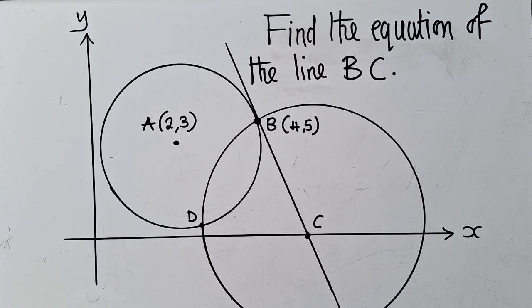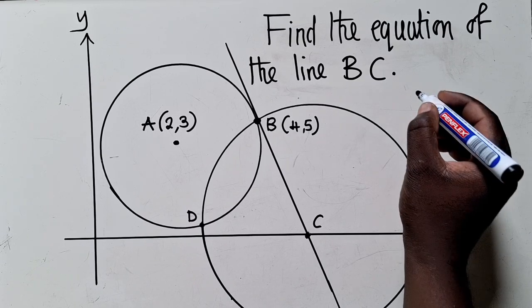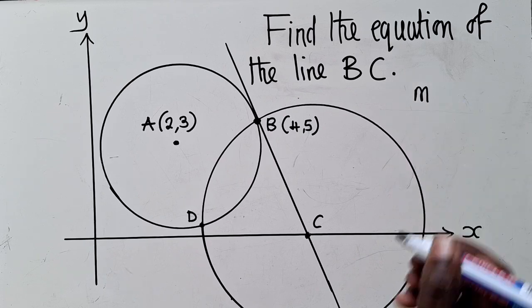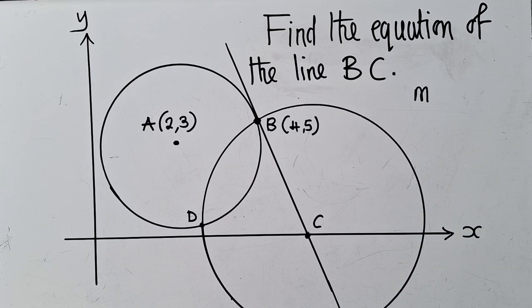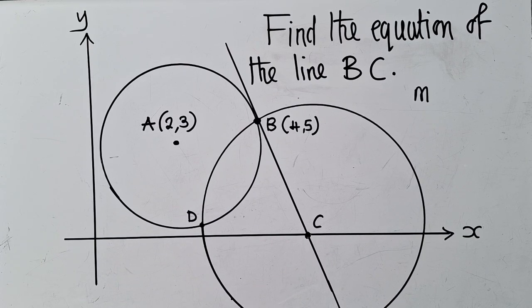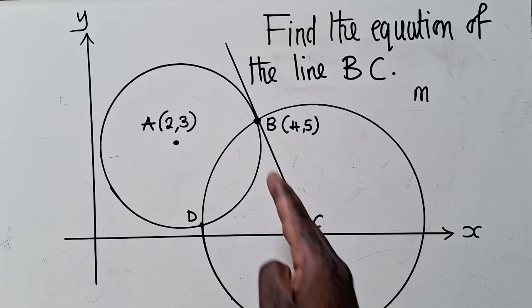For the line BC to be found, we're supposed to think of what we call gradient. Gradient is denoted using letter M. Now, when we check nicely, there are no coordinates right here at C. We don't have the coordinates, so we can't go directly finding the equation of this line.